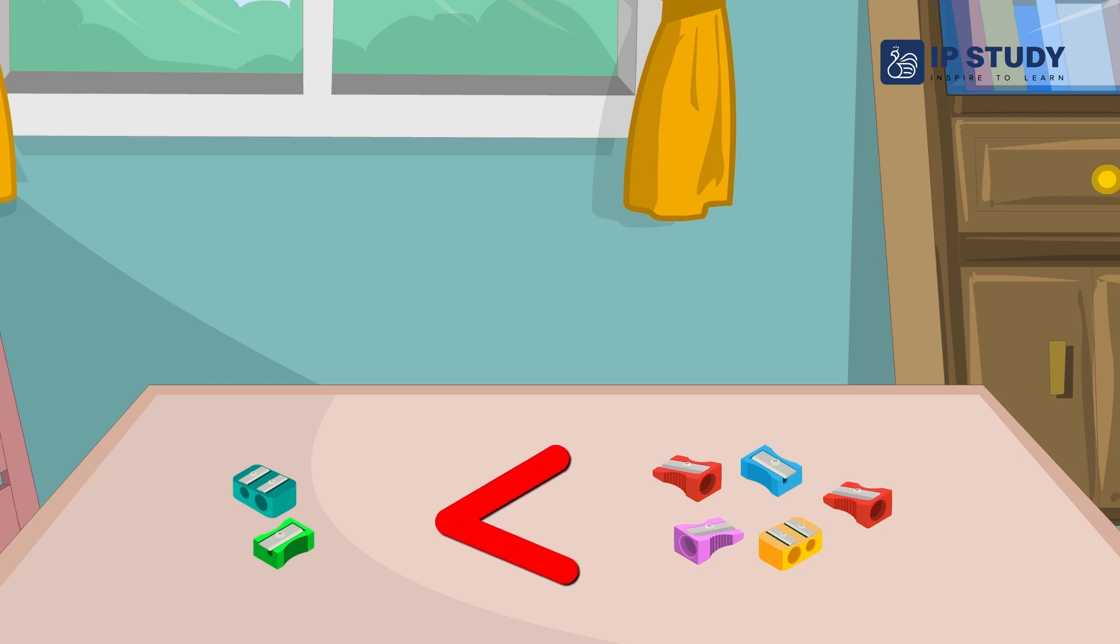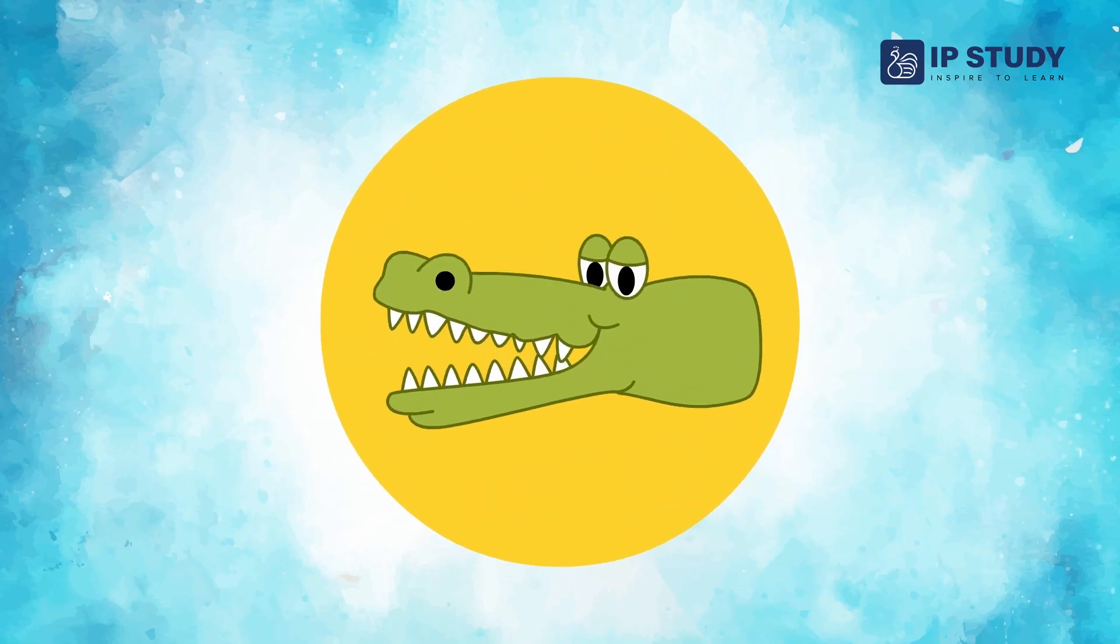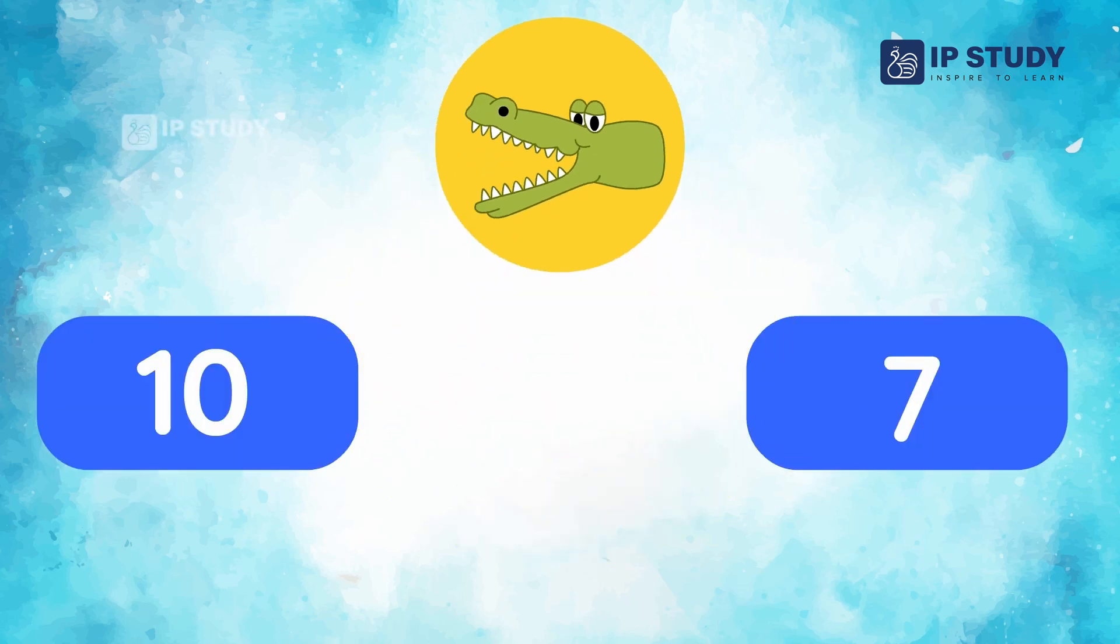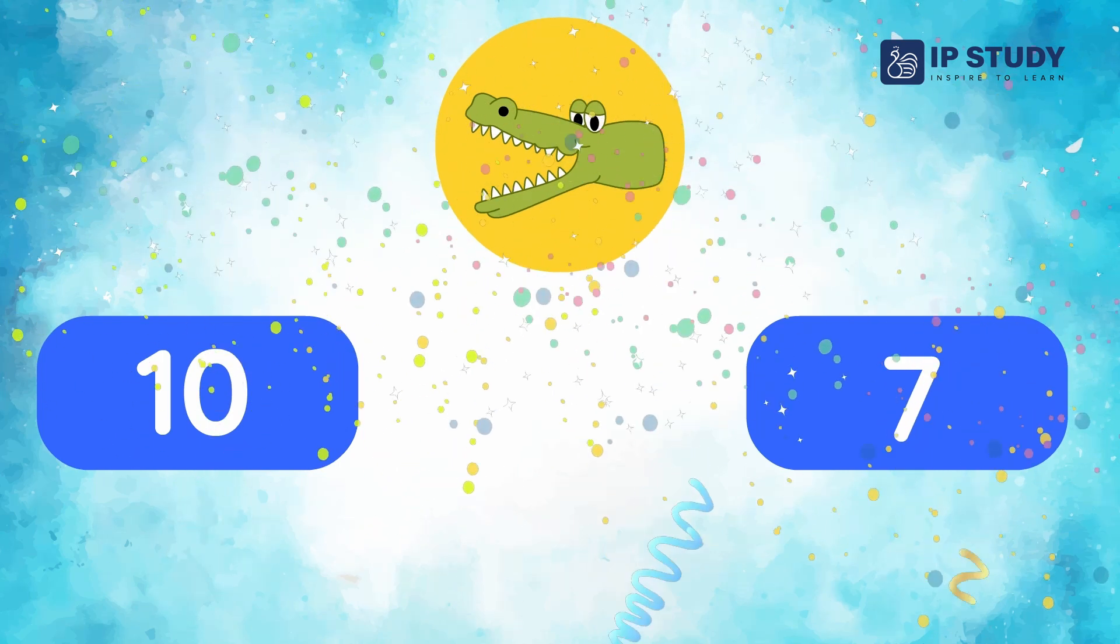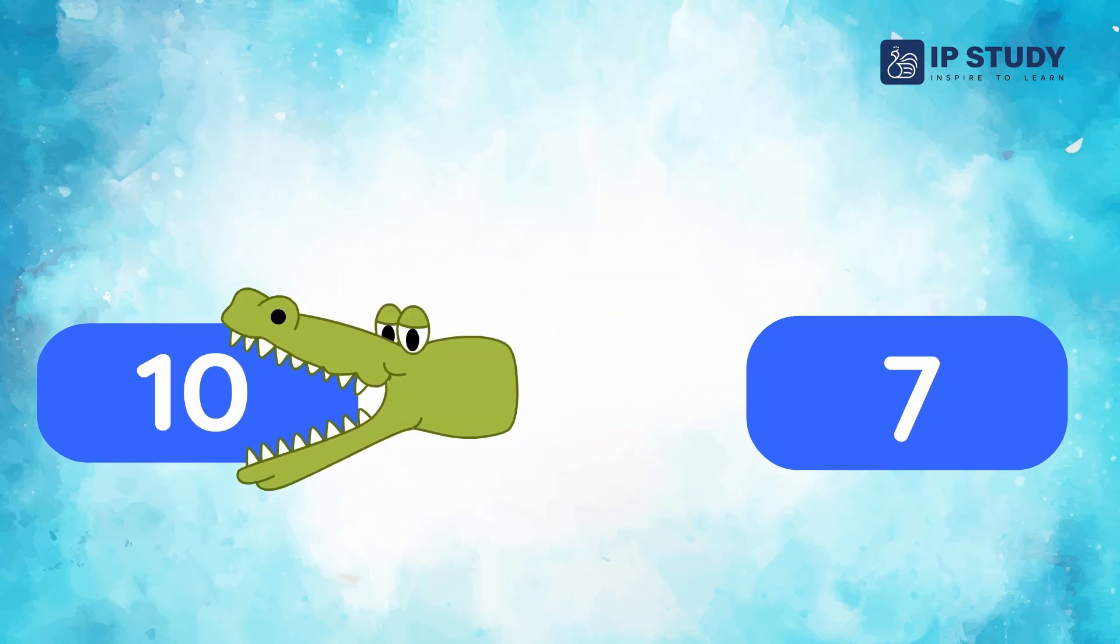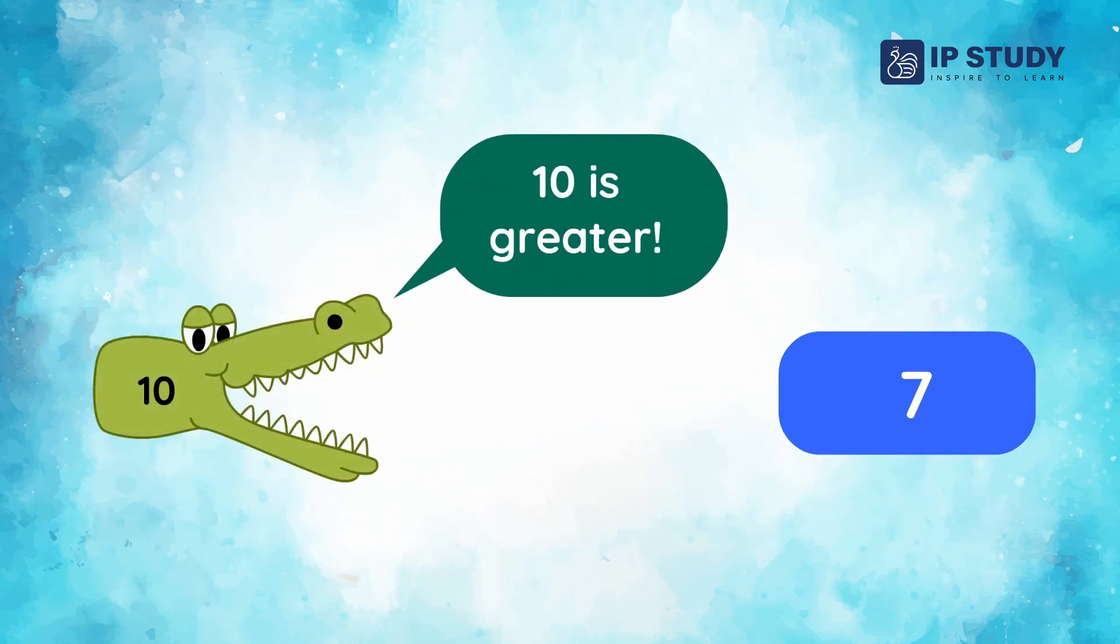Then we use smaller than sign for two sharpeners. The crocodile is very hungry. He wants to eat greater value. That's right. The left side is greater. Now he wants to eat smaller value.